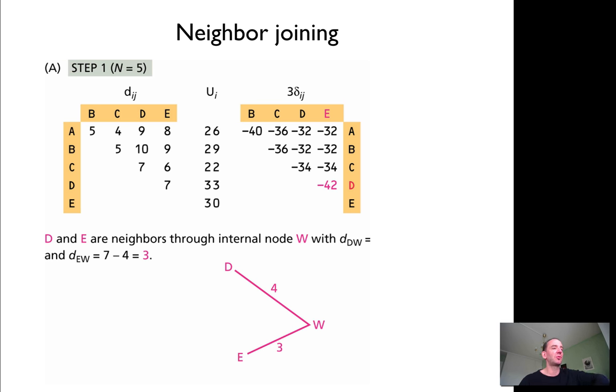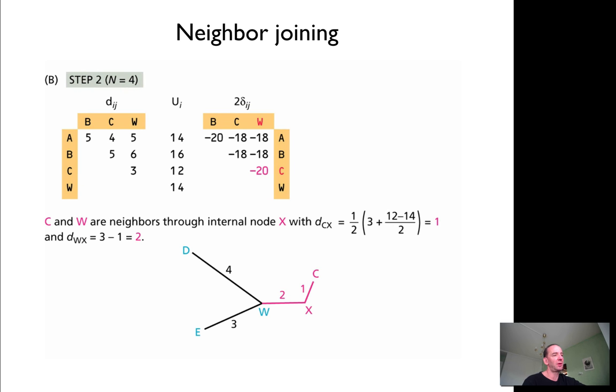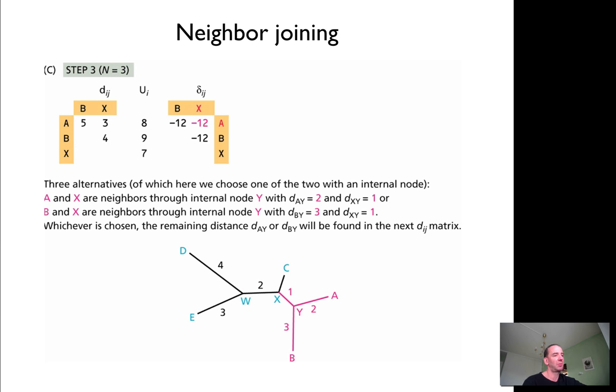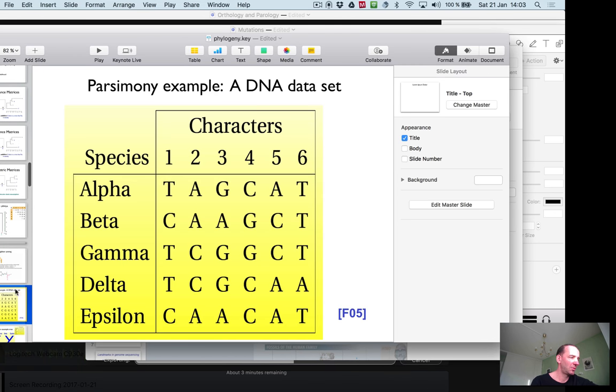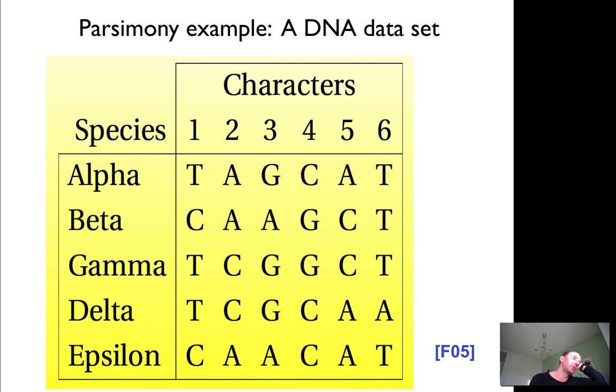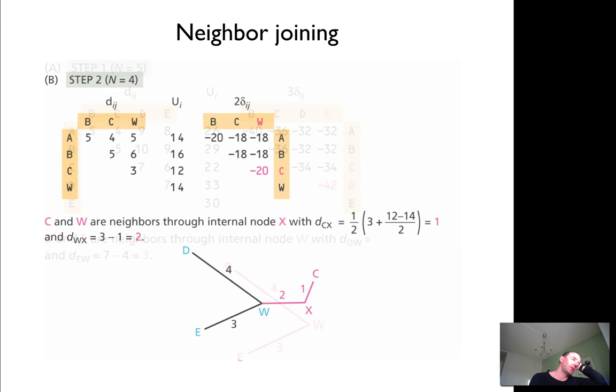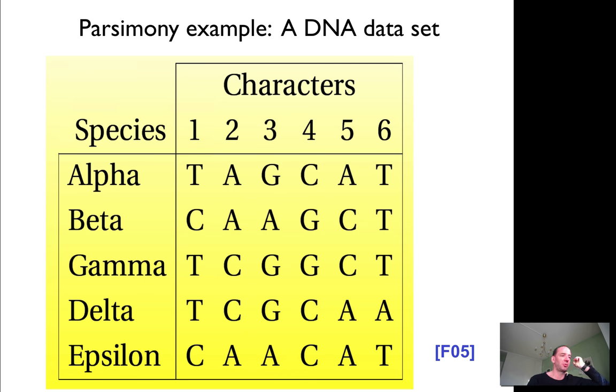You can do similar things using what's called neighbor joining. It's also described much better on the web, so I will put up a link for that. You can add numbers together in a similar way. And then we have parsimony methods.